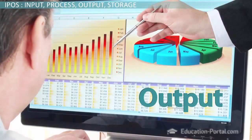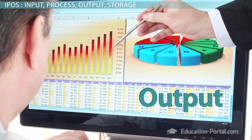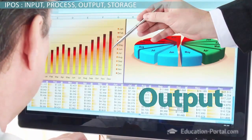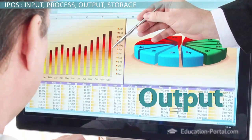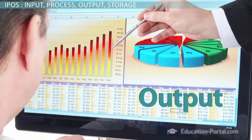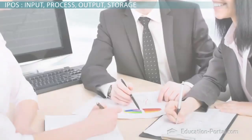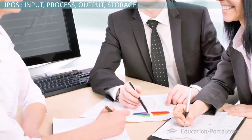Output, or processed information in a usable format, comes in many different forms: a monitor or printer for visual work, or a speaker for audio.